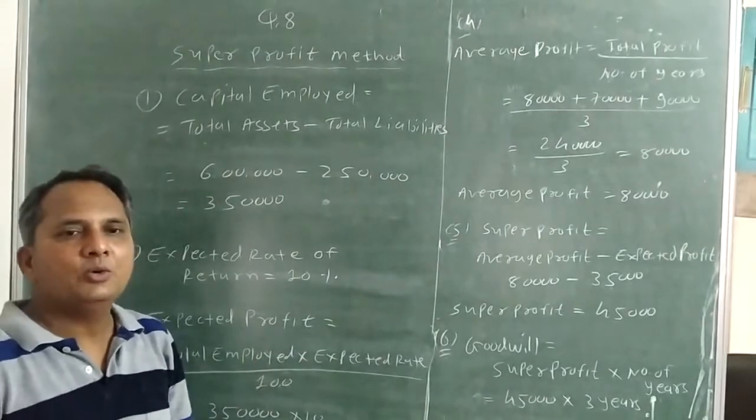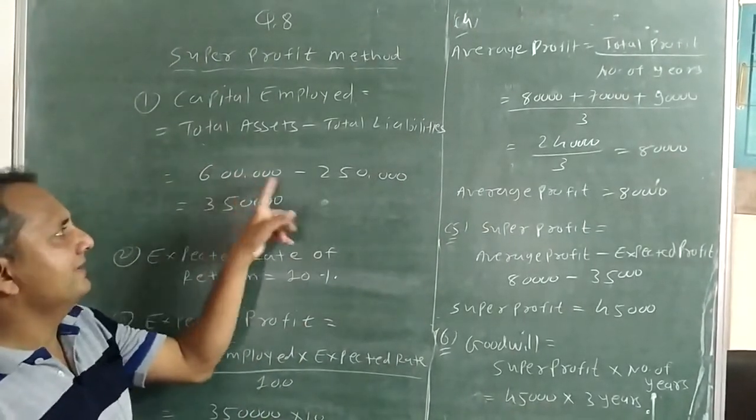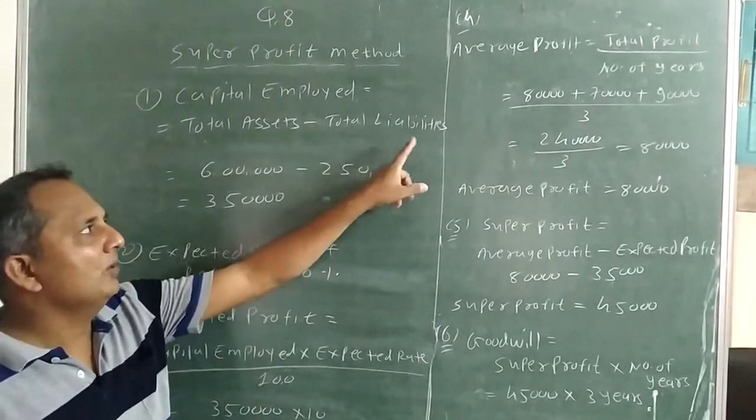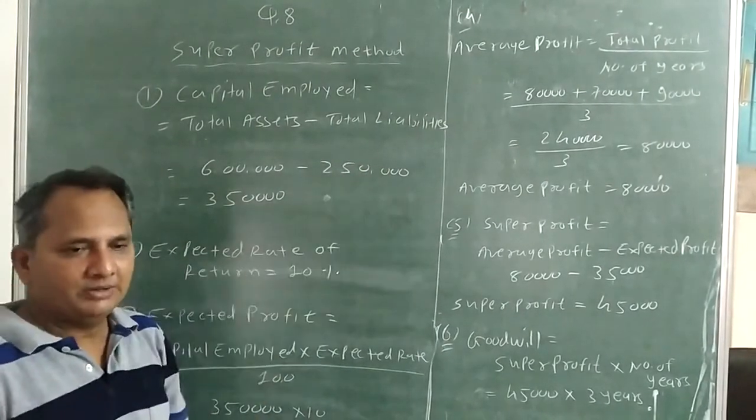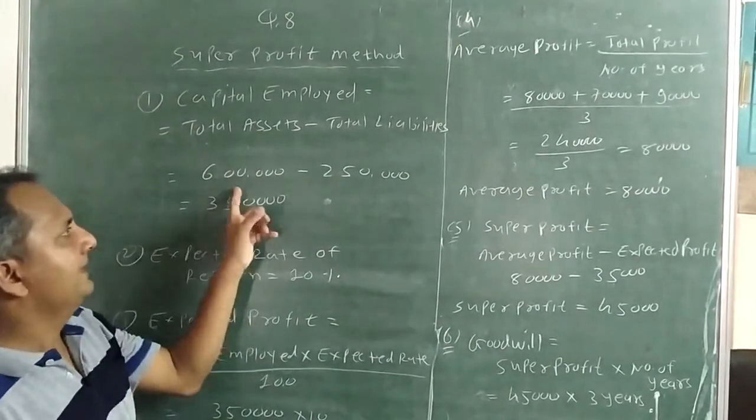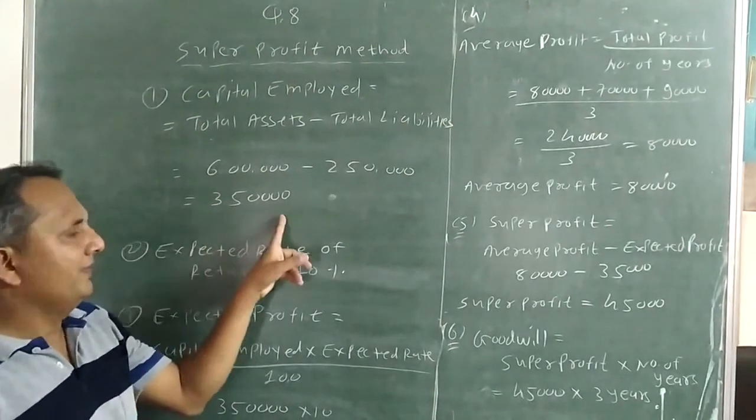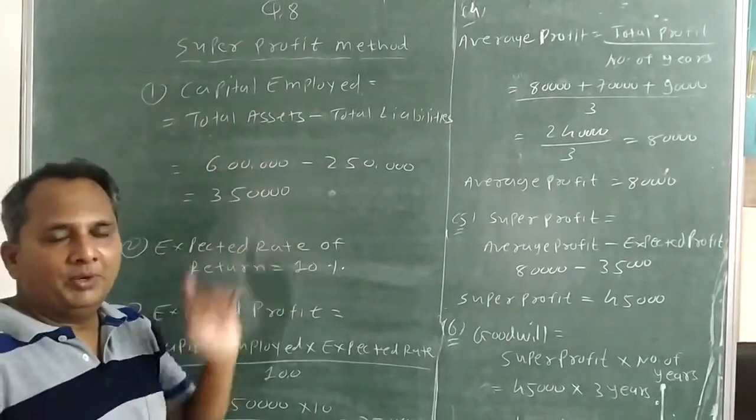Here you can see that total assets is given 6 lakh in the sum, total liabilities is also given 2 lakh 50,000. Now 6 lakh minus 2 lakh 50,000, 3 lakh 50,000 is capital employed.